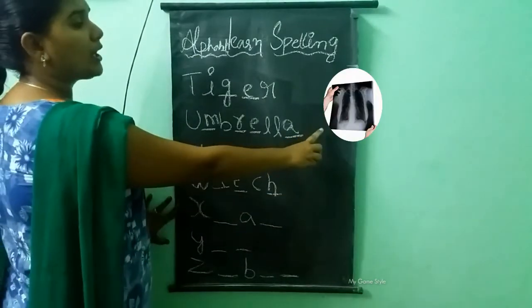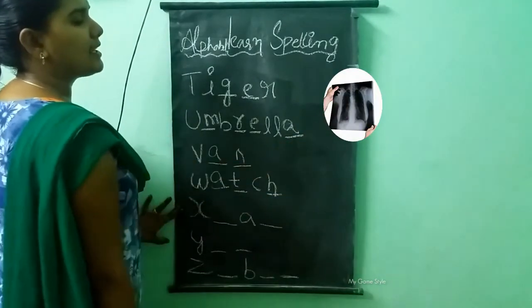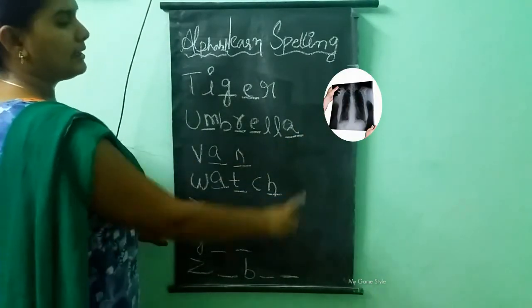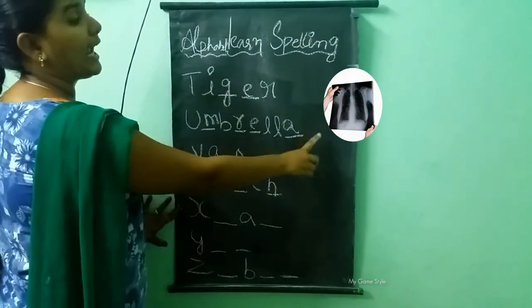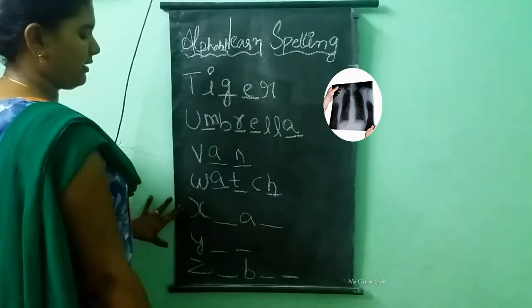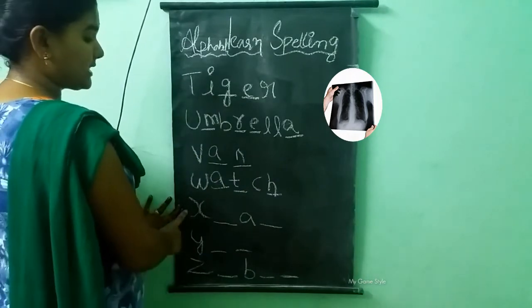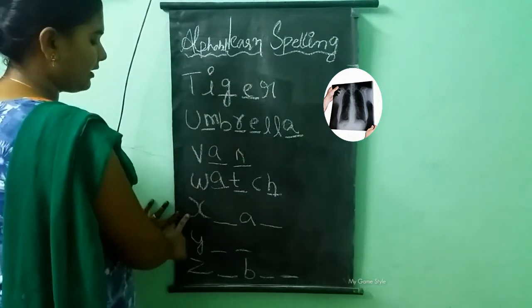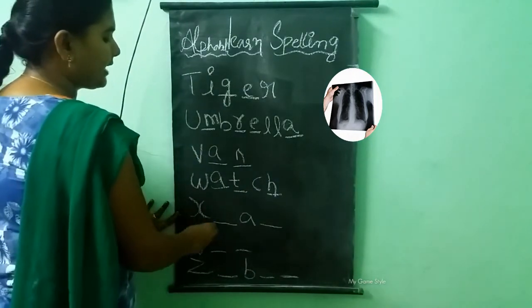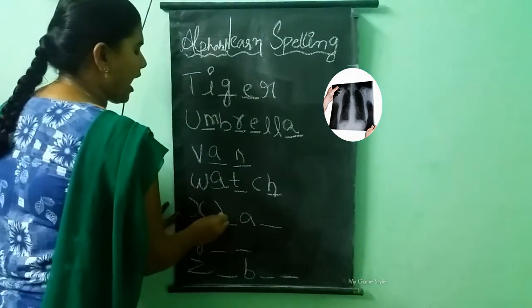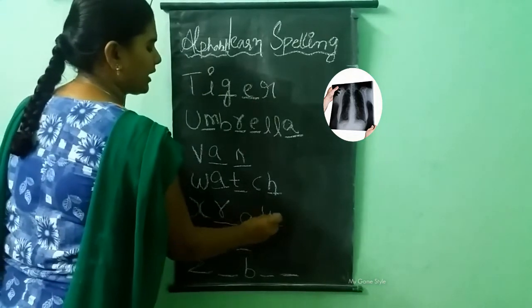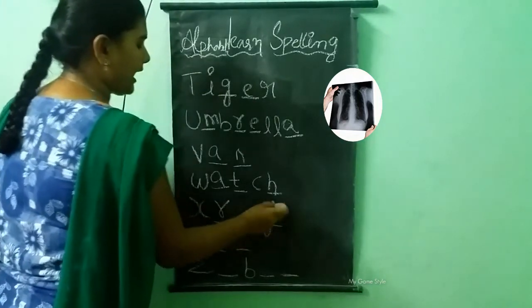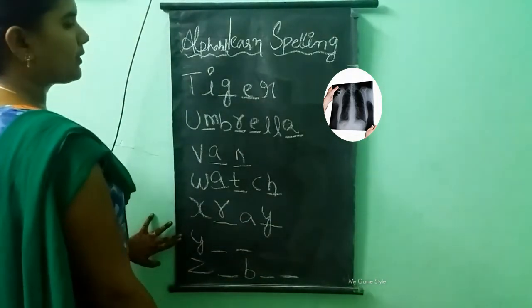What picture is this? This is an x-ray. What is the spelling of x-ray? X-R-A-Y. X-ray.